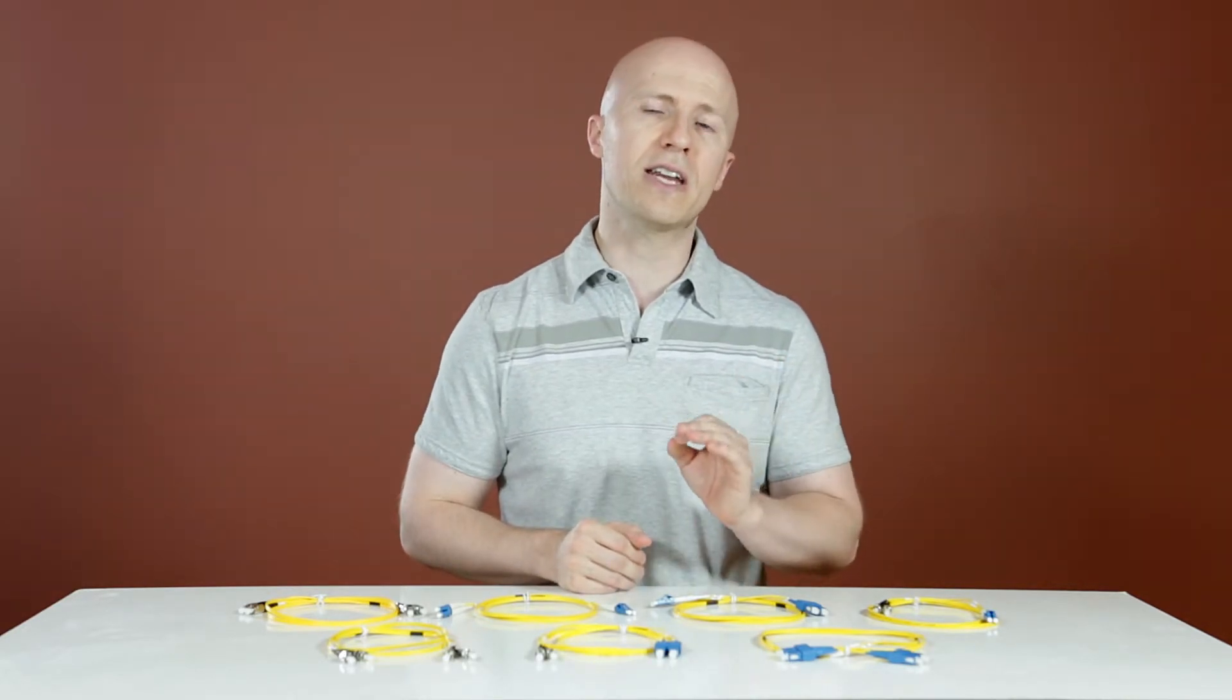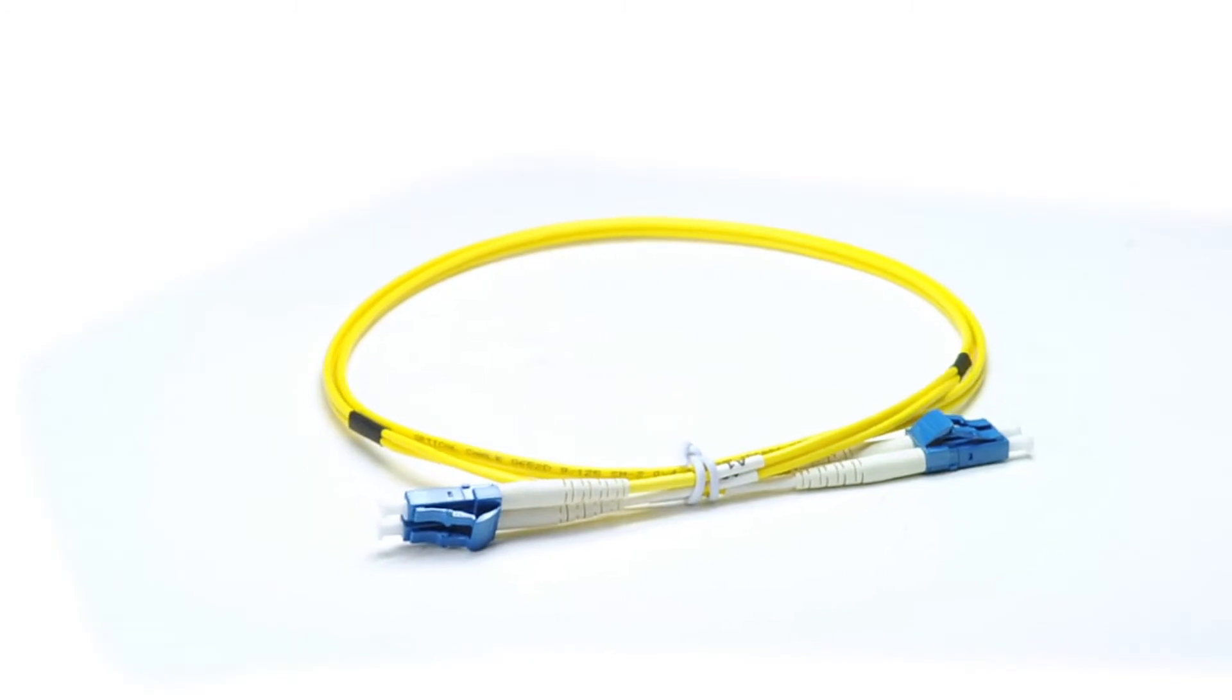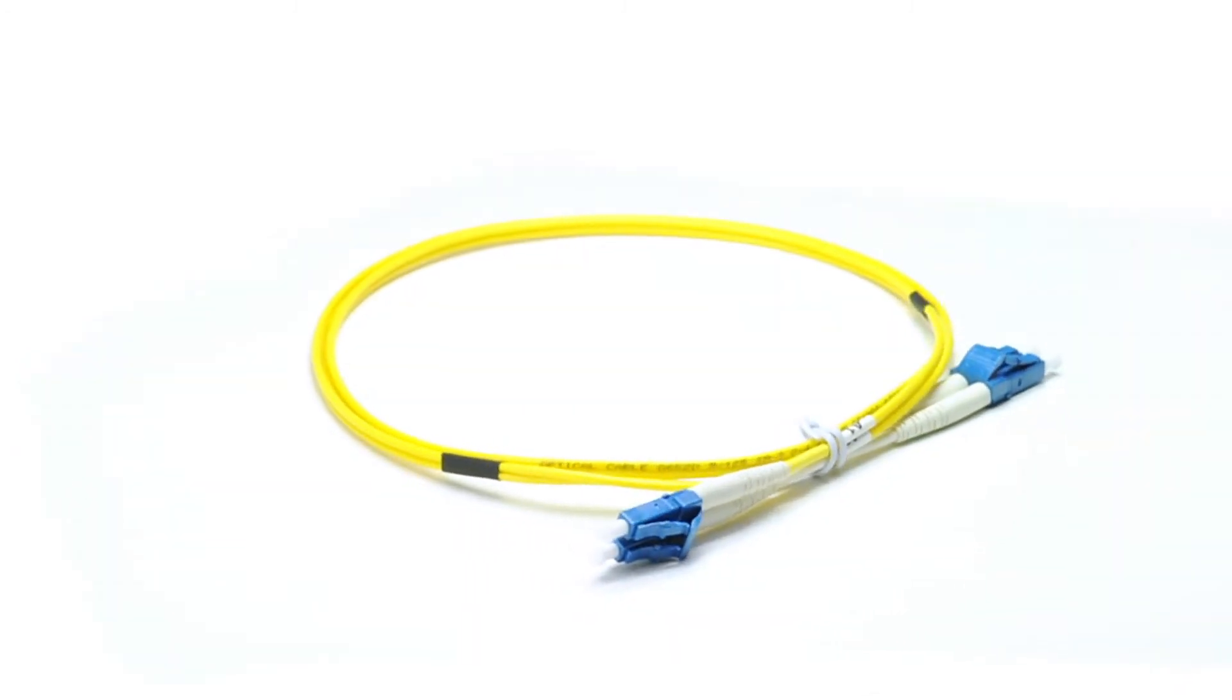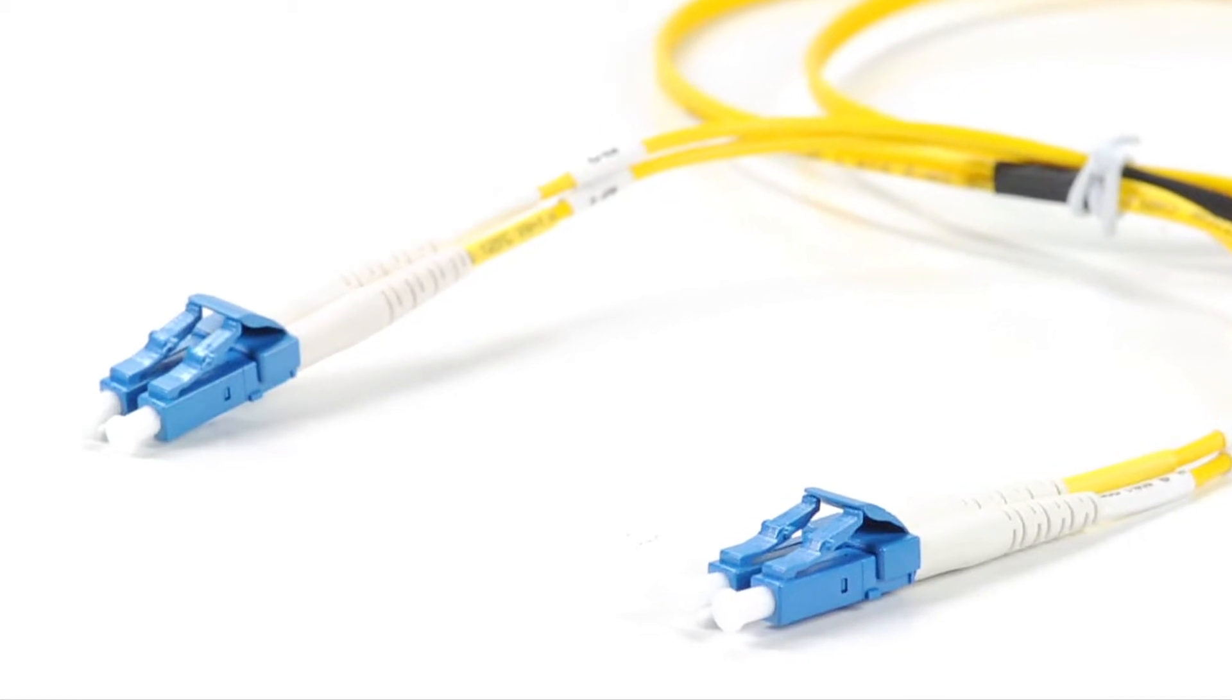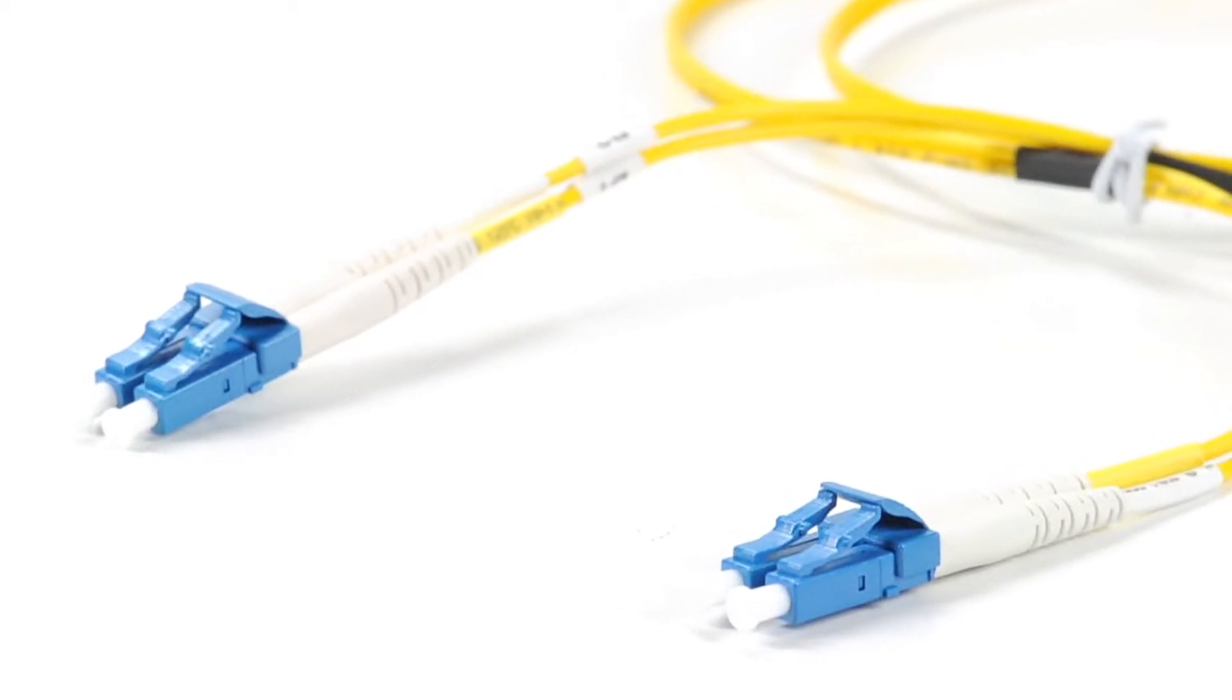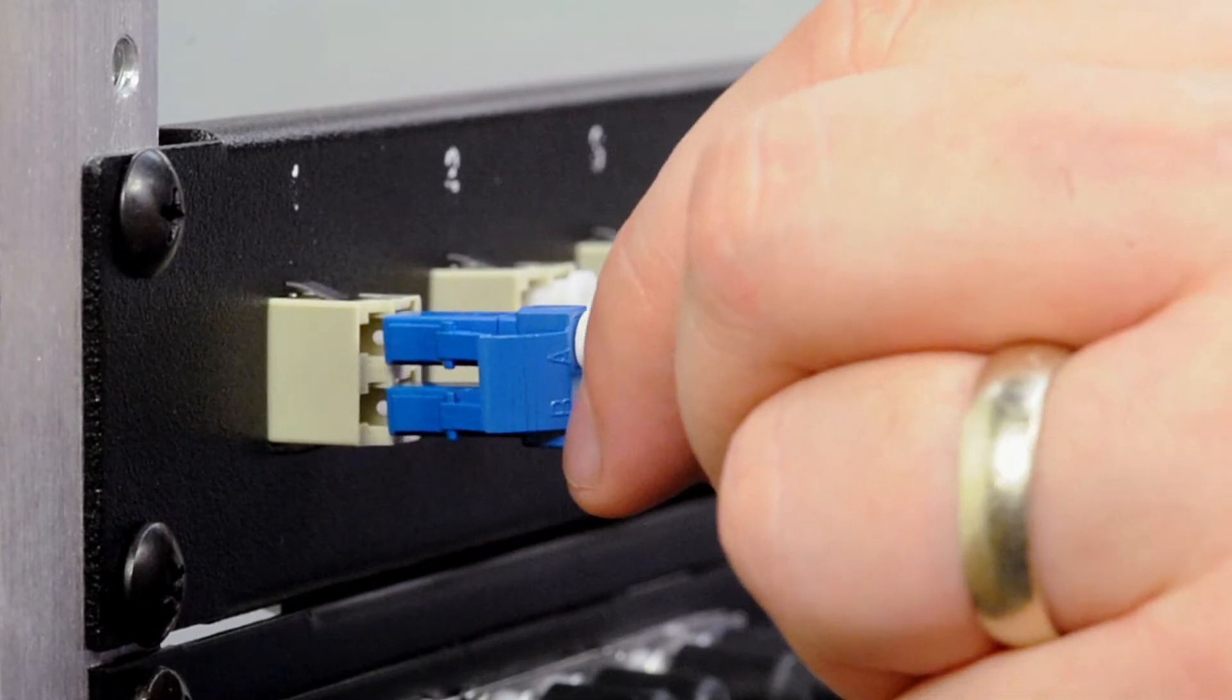This is an LC to LC single-mode duplex fiber cable. It features two LC connectors on one end and two LC connectors on the other end. An LC connector has a small form factor design to allow them to fit within network devices like switches, routers, and network cards.